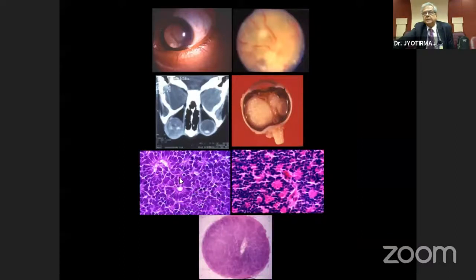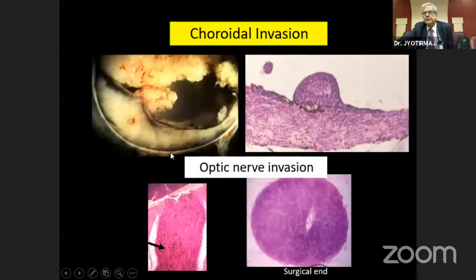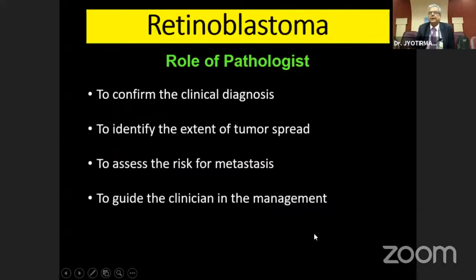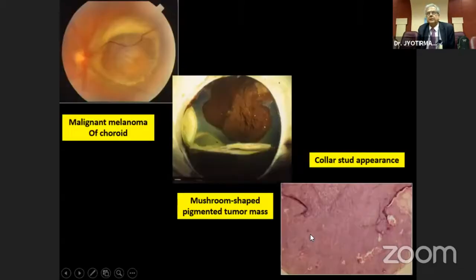In ophthalmic pathology, we look for involvement of structures of the eye such as choroidal involvement, which correlates with prognosis, and optic nerve involvement, particularly at the surgical end of the optic nerve. The role of the pathologist in retinoblastoma is: to confirm the clinical diagnosis, identify the extent of tumor spread, assess the risk for metastasis, and guide the clinician in management.